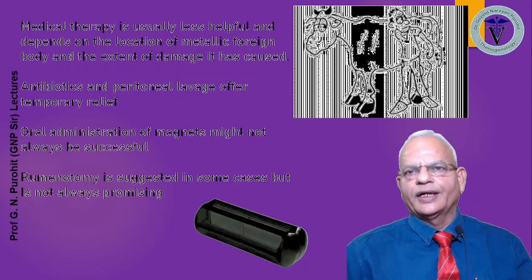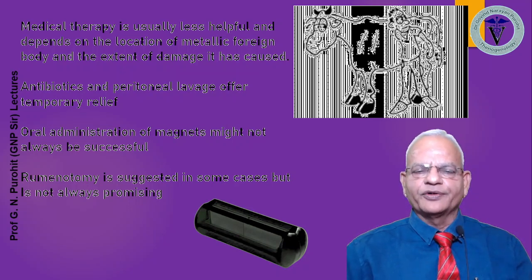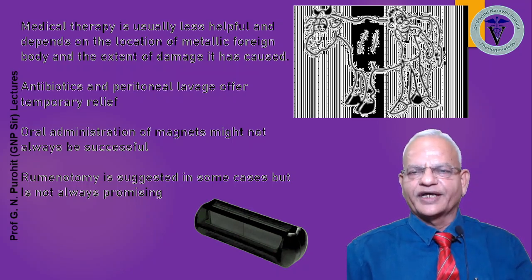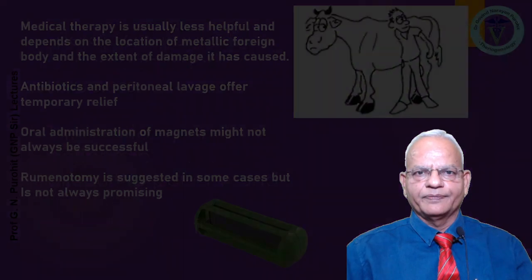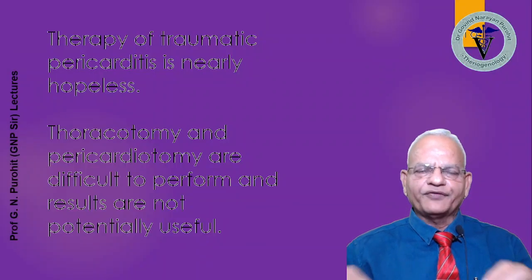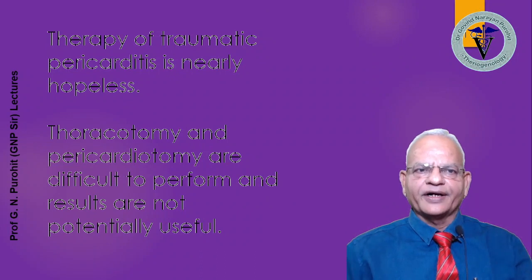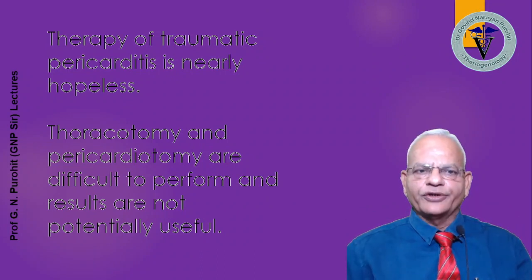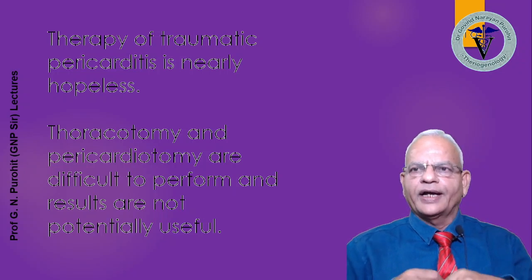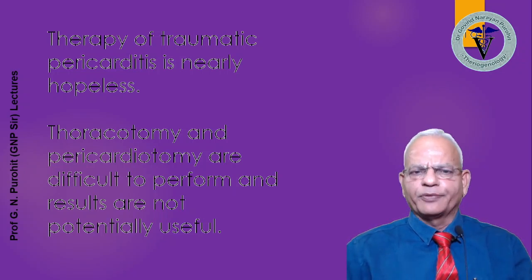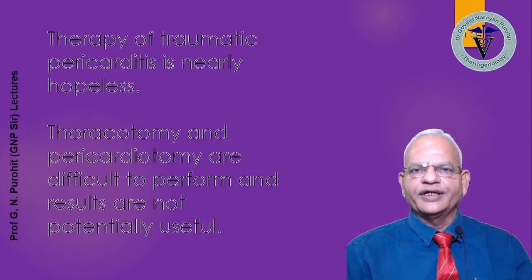Rumenotomy is suggested in some cases but is not always promising — one can perform rumenotomy to remove some foreign bodies, but not necessarily the metallic ones already piercing the reticulum. Therapy of traumatic pericarditis is nearly hopeless. Thoracotomy and pericardiotomy are difficult to perform, and many approaches have been suggested, but the results are not potentially useful.